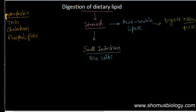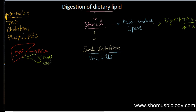Now the question is who provides these bile salts. Here we have a very important organ called the liver. The liver produces the bile, which is stored in the gallbladder, and the gallbladder pumps small proportions at a time into the small intestine.